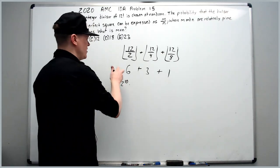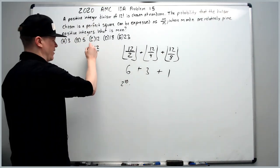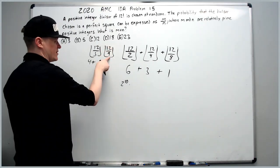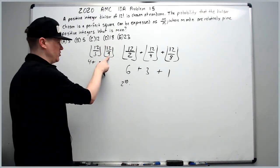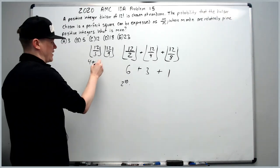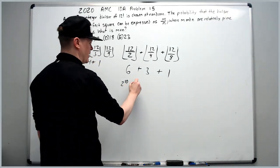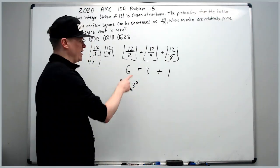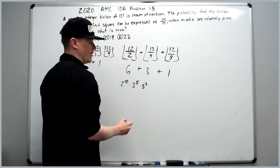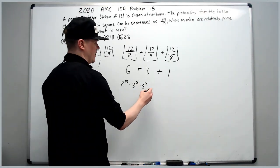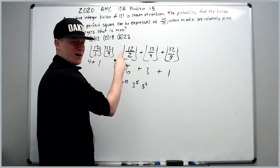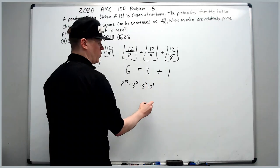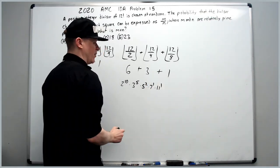Next, for 3's: 12 divided by 3 rounded down is 4, plus 12 divided by 9 rounded down is 1 (since 9 contributes an additional 3), giving 3 to the 5th. From here there are no more perfect squares dividing, so 12 divided by 5 gives 2 powers of 5, 12 divided by 7 rounded down gives 1 power of 7, and 1 power of 11. So 12 factorial equals 2^10 times 3^5 times 5^2 times 7^1 times 11^1.